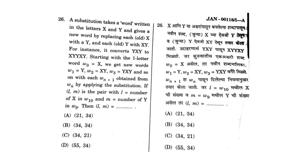Moving on to the 26th question — I am not reading the full question because it is quite big. Just read the first two lines. The substitution takes the word written in letters X and Y. For this question the correct answer is B, that is 34.